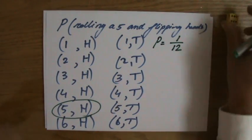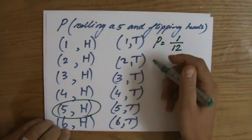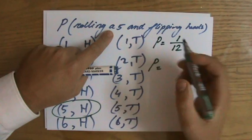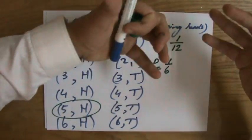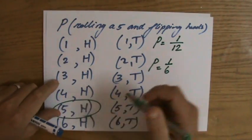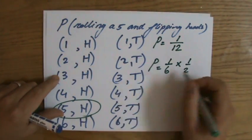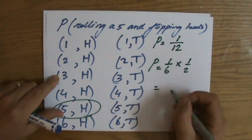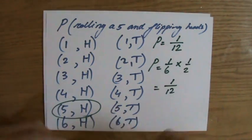However, especially when you're talking about more dice and more coins, it is easier to say: well, the chance of rolling a five is one out of six. And because the next event is combined with the first, what is the chance of flipping a head — that is one over two — and then I multiply them, because both of them have to happen. One over six times one over two is one over twelve — that's the same answer.